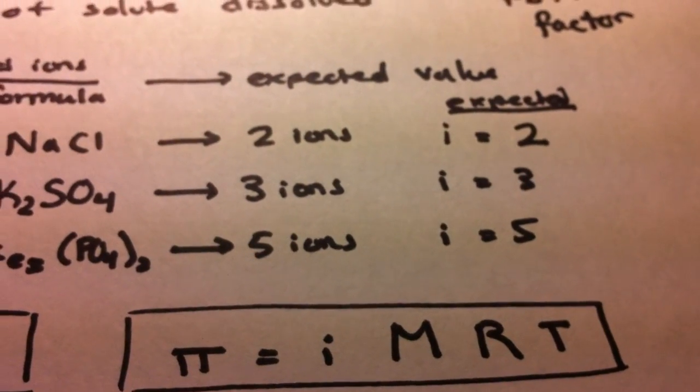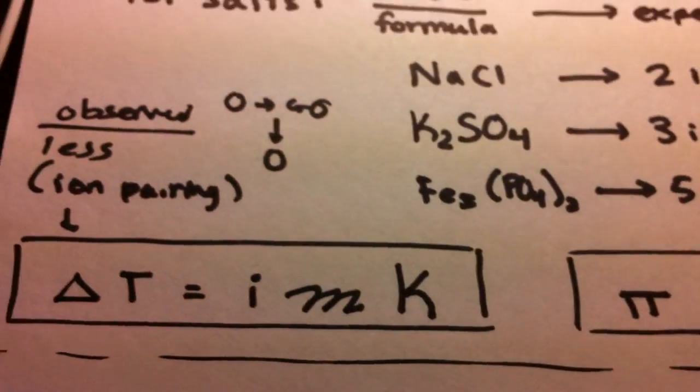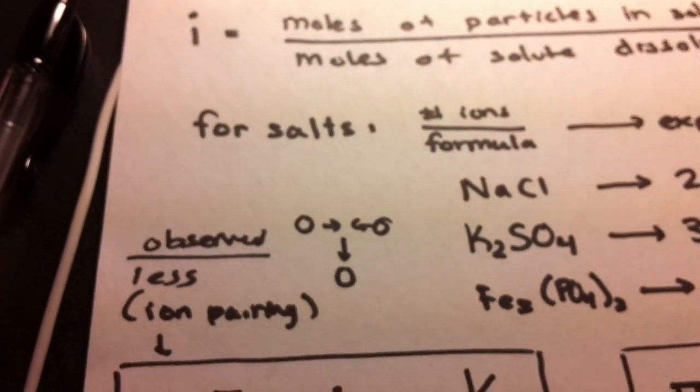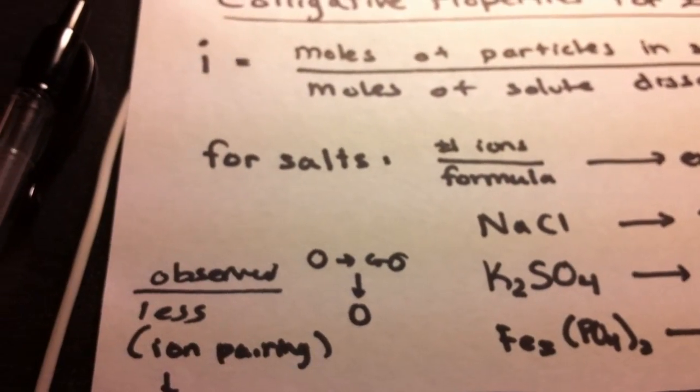And we can also change the equation for osmotic pressure, pi equals i times M times R times T. We can also exemplify this lesser value for the observed solutions with this example problem.